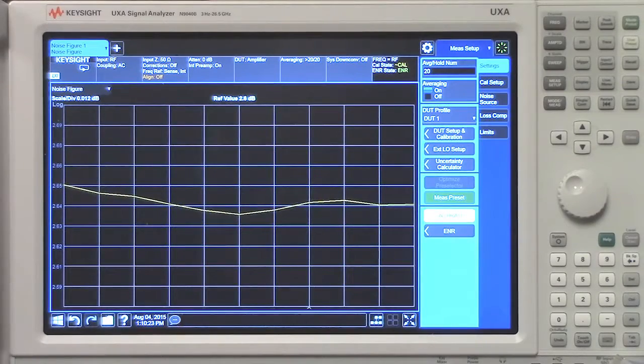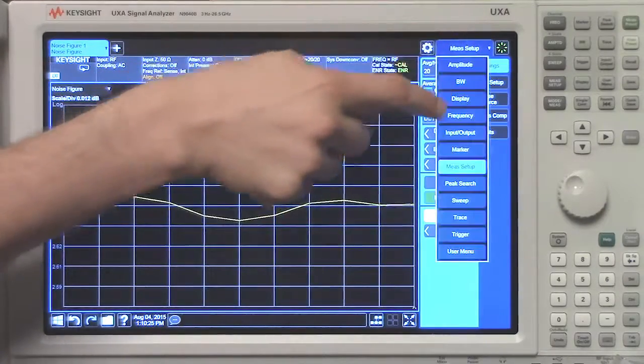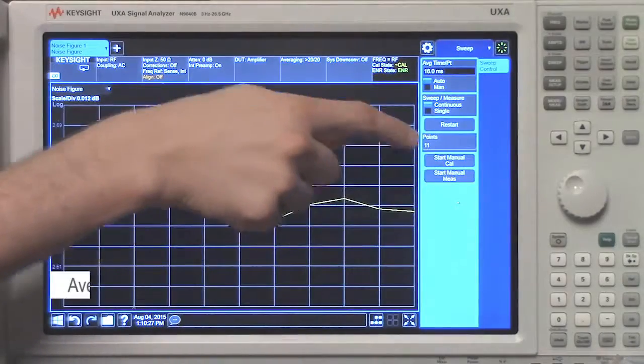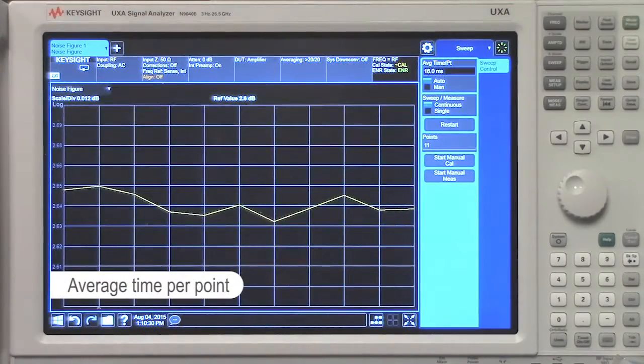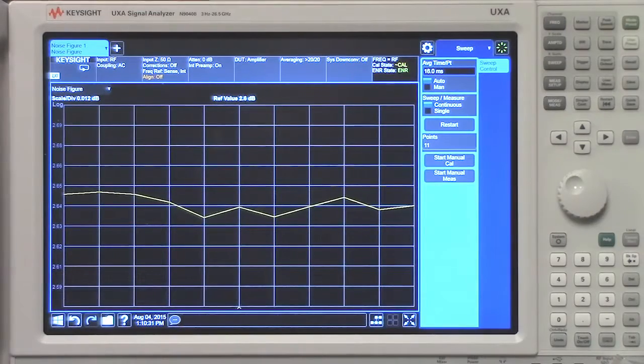Let's navigate to the sweep tab to see one more kind of averaging. This type of averaging is called average time per point. By default it is toggled to auto.